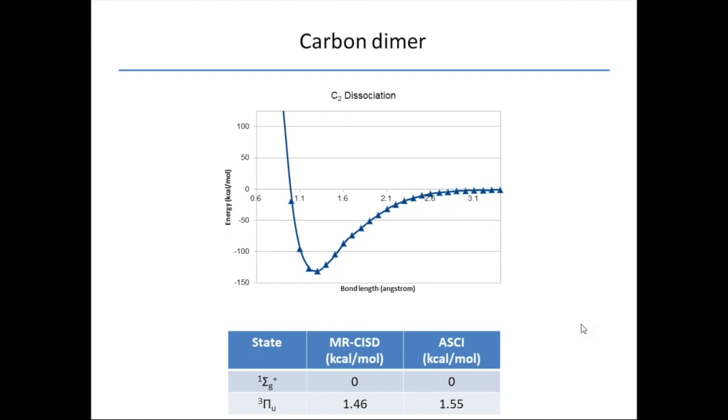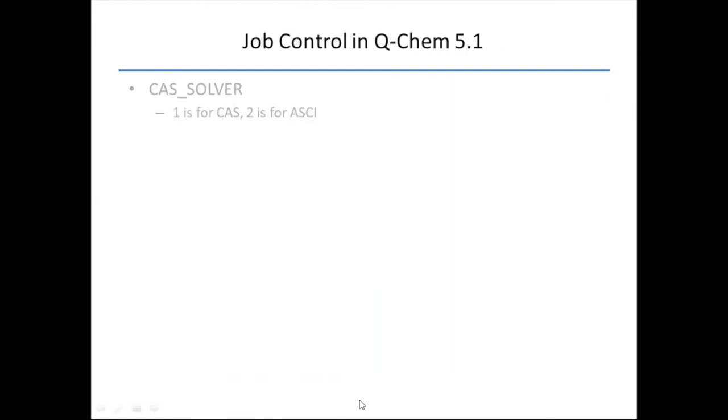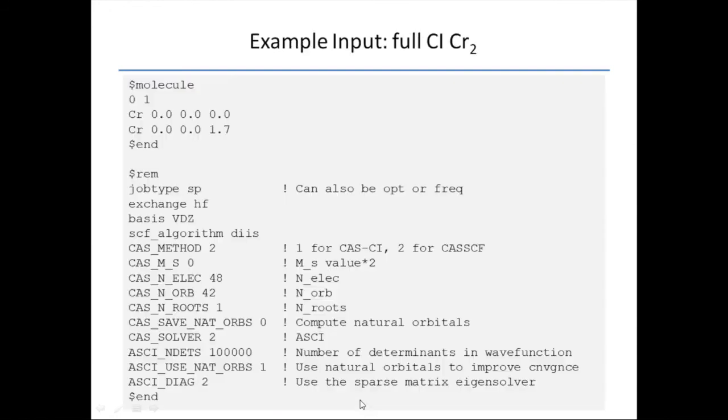You can also do a spin flip thing. You can specify one spin state up here and a different spin state down here. So you could do a spin flip type thing where if there's a more sensible RHF reference with a higher spin configuration, then you can spin flip down here to get to the spin state you want. That's another option you can try.